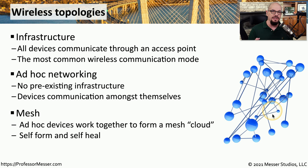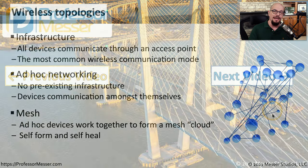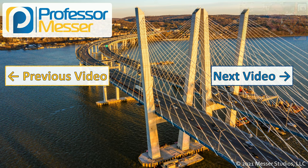One of the advantages of these mesh wireless networks is that it allows many devices to communicate to each other, even if those devices are very far apart from each other. This also allows the mesh network to self-heal. So if you turn off one of those IoT devices, the remaining devices will self-heal and redesign themselves into a mesh network that will allow them to continue the communication.